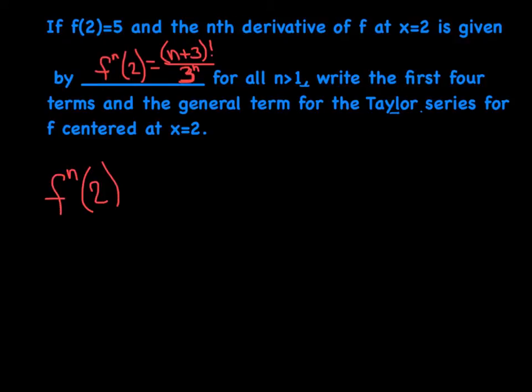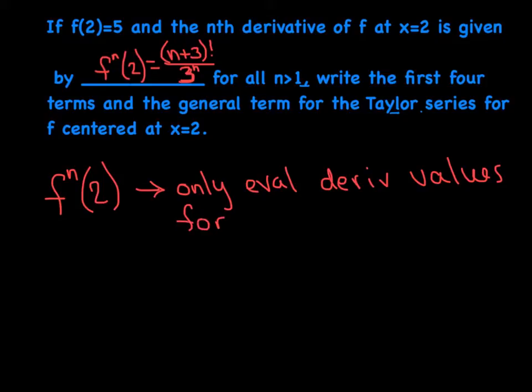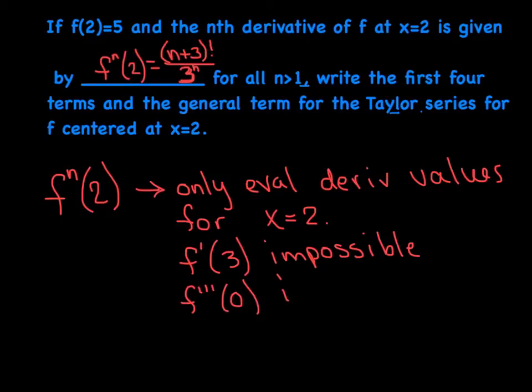We want to talk about this expression right here in red and what exactly it does for us. So this is the nth derivative evaluated at two. It's kind of an unusual expression, and it only evaluates derivatives, and I think this is worth writing down. It only evaluates derivative values for x is equal to two. And basically what that means is it's a very specialized expression for evaluating all the derivatives just at two. For instance, if you wanted to know what's the first derivative of f evaluated at three, we can't do it. It's impossible because the expression we have only works when x is equal to two. If you wanted the third derivative evaluated at zero, again, impossible because our expression only works when x is equal to two, which is fine because that's all we need. We're trying to create a Taylor series centered at two, so all we need is the derivative at two.